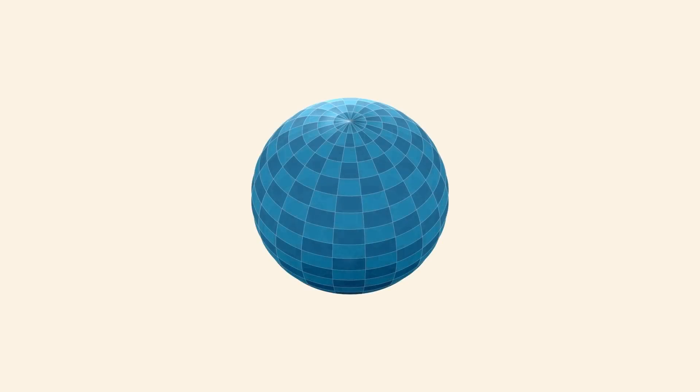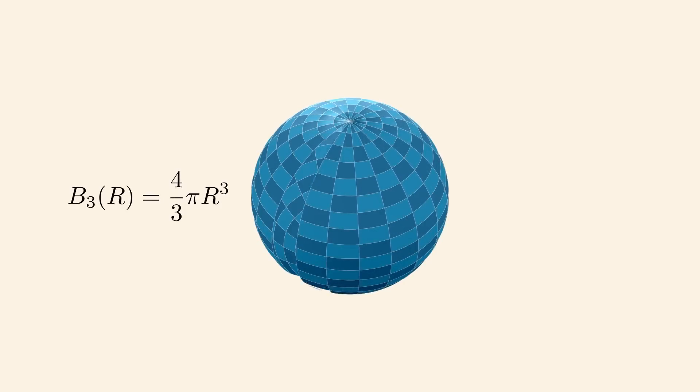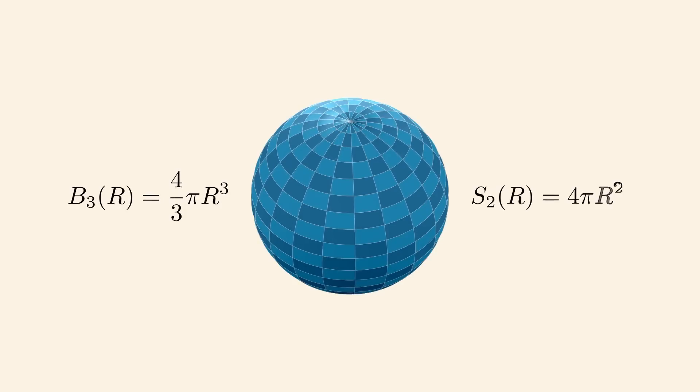For example, the area of the circle is B2, which is π r squared. Its boundary is S1, which is 2π r. For the classical sphere, we have its volume at 4 thirds π r cubed, and its surface area is 4π r squared.